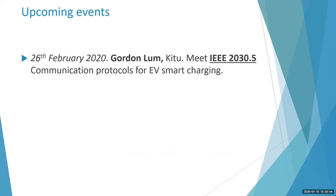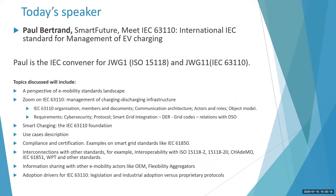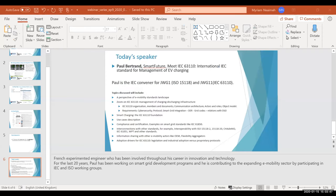The upcoming event is going to be in February and it's going to focus on another communication protocol. It's a generic one, not specific to electric vehicles, but it could be used with electric vehicles, and it's called IEEE 2030.5. Today's talk is by Paul Bertrand, who is the convener for both Joint Working Group 1 and ISO 15118, and Joint Working Group 11 in IEC 63110. I'd like to pass the presentation to Paul, because he has prepared for us a really good presentation. So Paul, over to you.